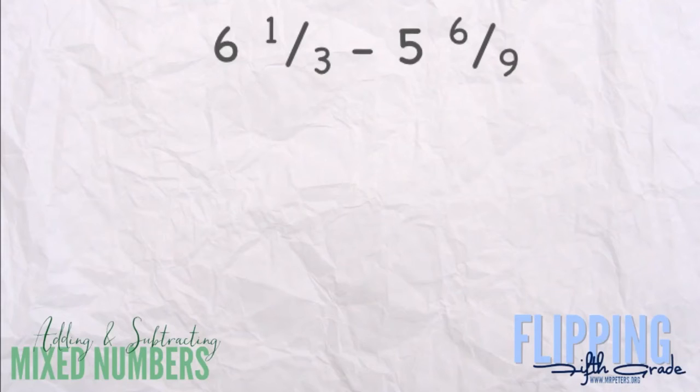All right, let's look at this problem. 6 1/3 - 5 6/9. Again, we want to find a common denominator. So to do that, we say, first ask ourselves, does 3 go into 9? The answer is yes, so that's the bigger number, 9, is our common denominator. So we're going to have 6 and something over 9, minus 5 and 6 over 9.